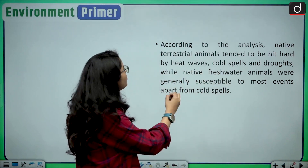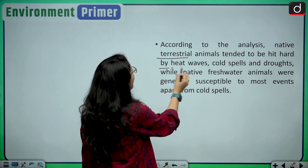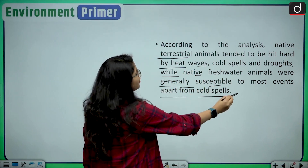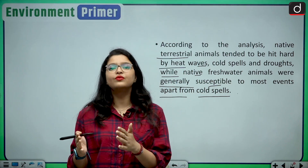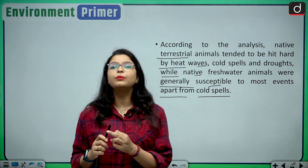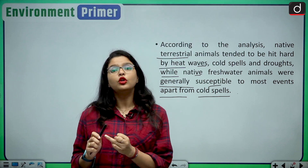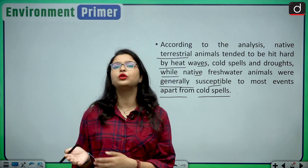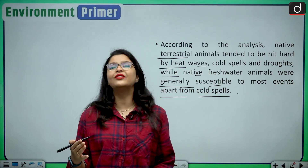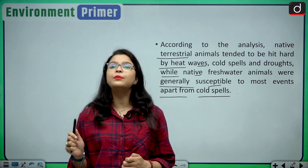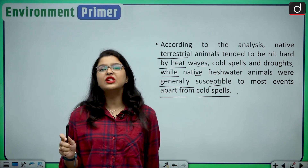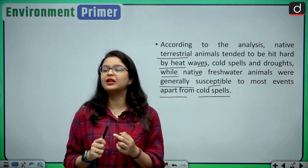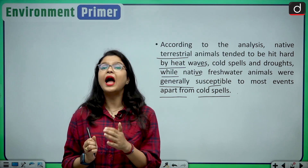Research points out that native terrestrial animals tend to be hit hard by heat waves, cold spells, and droughts, while native freshwater animals are generally susceptible to most events apart from cold spells. Land animals are not immune to rising temperatures, and marine animals are facing increasingly polluted oceans. Climate change and human activity are responsible for the ecological and biodiversity changes we are experiencing.